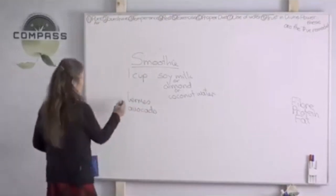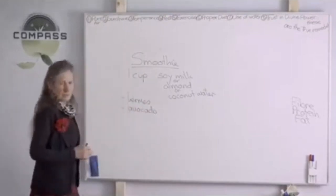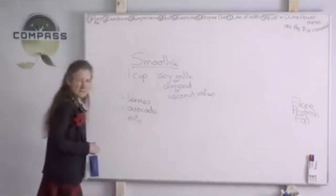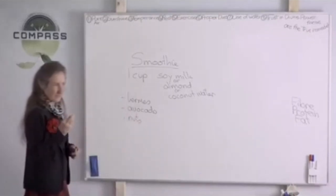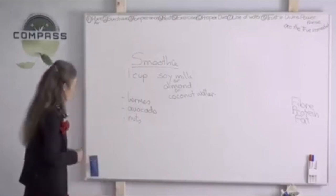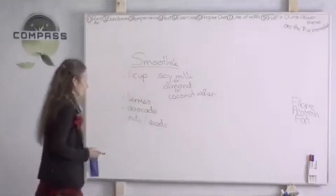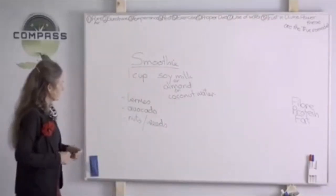Some nuts and seeds. What makes it very nice is the chia—chia gives it a bit of thickness—or the ground flax seeds. Now if it's for breakfast, we need to up the protein a bit.